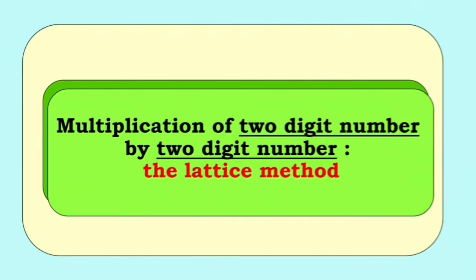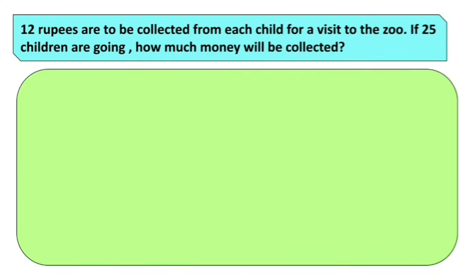Now we move on to multiplication of a 2-digit number by a 2-digit number. 12 rupees are to be collected from each child for a visit to the zoo. If 25 children are going, how much money will be collected? So we need to find 25 multiplied by 12.